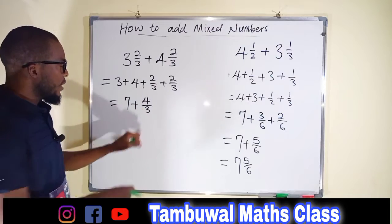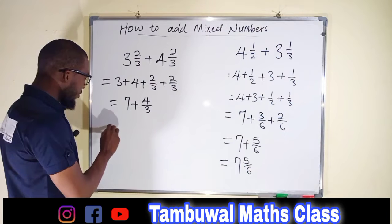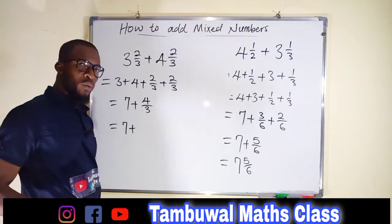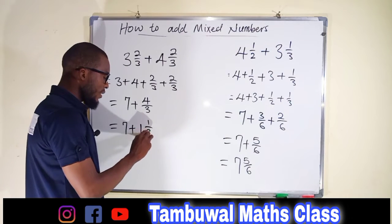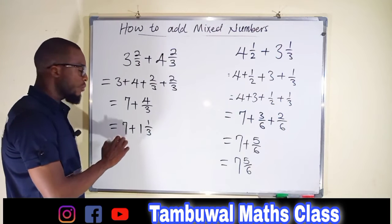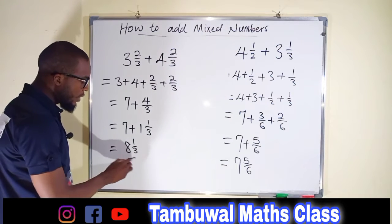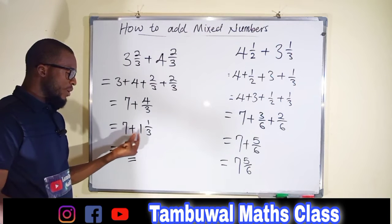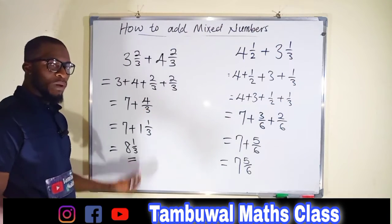It is not proper to leave our fraction as 4 over 3 in this form, because we are dealing with mixed numbers. So we count how many times the denominator goes into the numerator: 3 can go into 4 one time, with 1 left over, giving 1 and 1 over 3. We still have the whole number 7, which we join with the 1 to make 8. So 7 plus 1 and 1 over 3 gives us the final answer: 8 and 1 over 3.